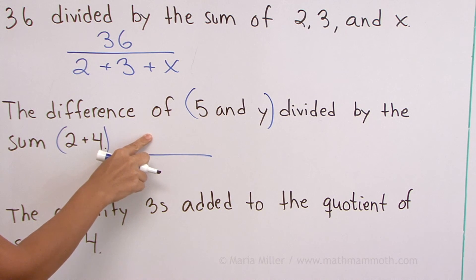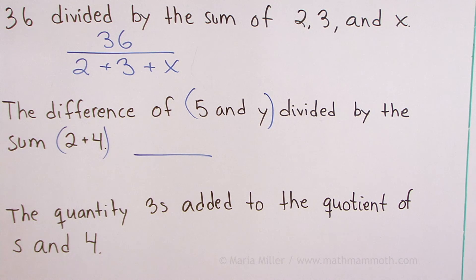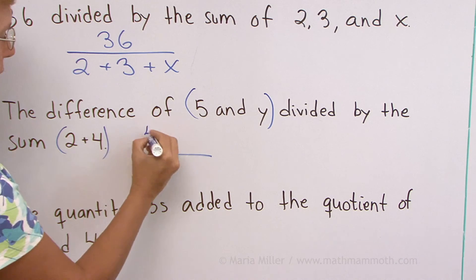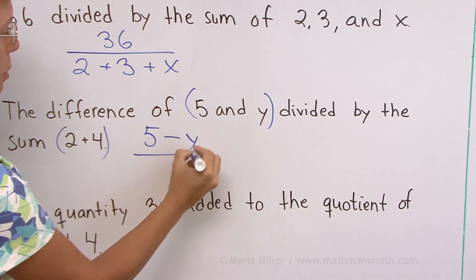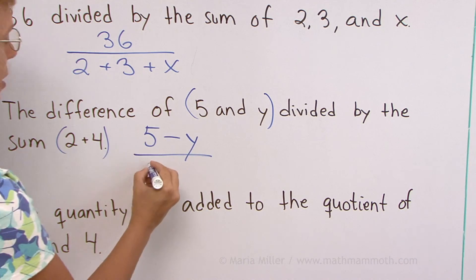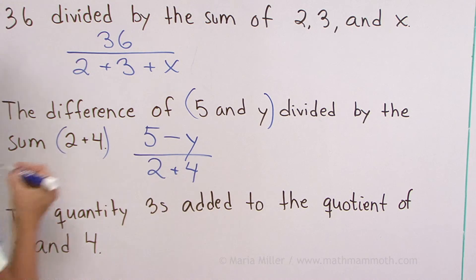Okay. Here we have the difference of 5 and y. The difference was subtraction, right? So 5 minus y. And then divided by the sum, 2 plus 4.